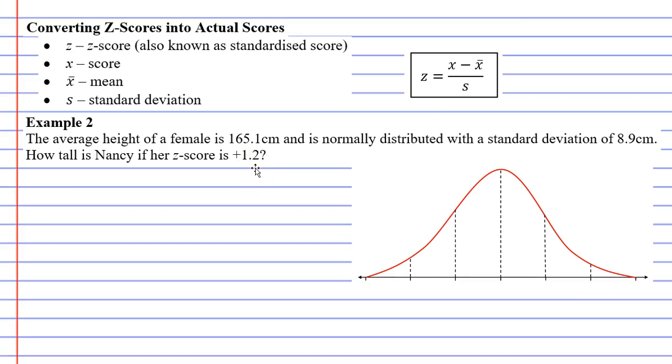So already you might have noticed that this is quite a challenging question because there's quite a lot of decimals here, and in particular our z-score is a decimal. I still like to write my z-scores down on my bell curve, it just helps me visualize what's going on.